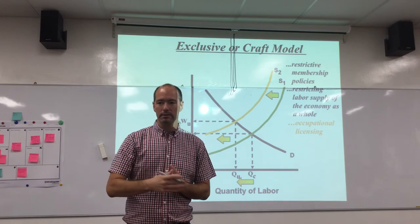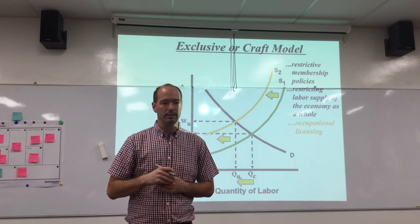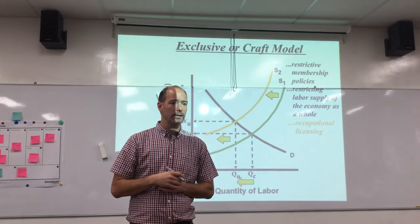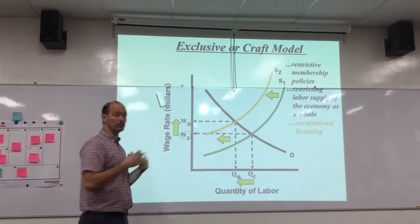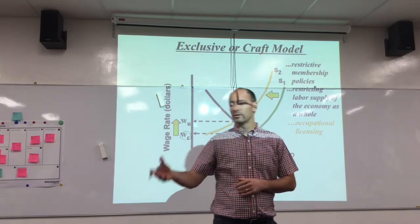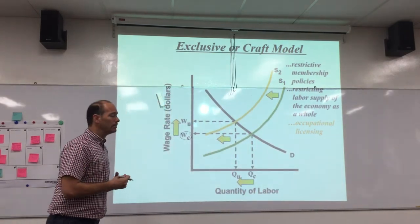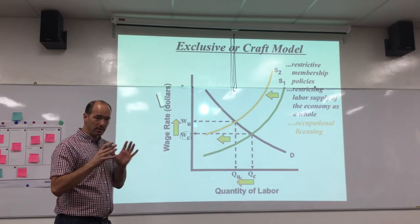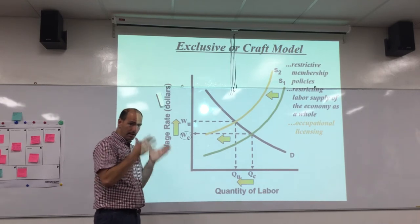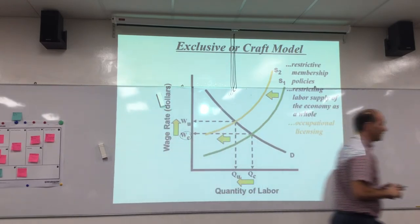So all of us — teachers, lawyers, and others who require these licenses — make more as a result. That can be justified on the grounds that we want our doctors to know what they're doing, our lawyers to know the law, and teachers to know how to teach. But you can't argue with the fact that it restricts supply and causes the price to be higher. That's the craft model.